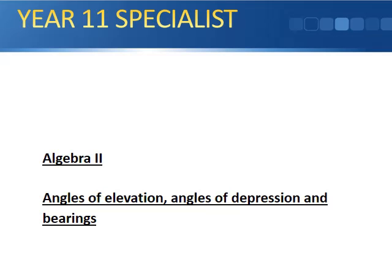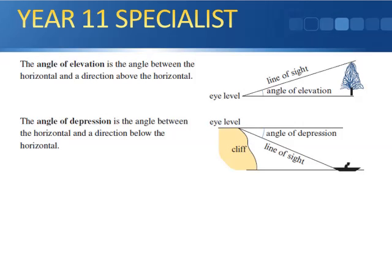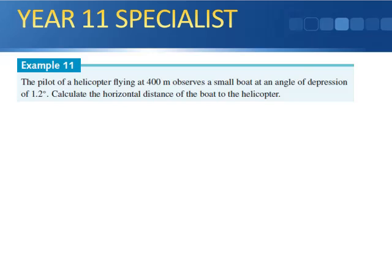Angles of elevation and angles of depression: if we first look straight and then look up, we get an angle between the two lines — that's called the angle of elevation. The angle of depression is similar; if we look straight and then look down, the angle those two lines make is the angle of depression. Angles of elevation and depression are equal to each other.